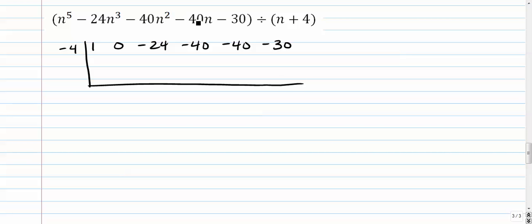Make sure I didn't screw up any of these. No, I think I'm all right. So here we go. We're going to bring down the 1. Negative 4 times 1 is negative 4. Add those together. Negative 4 times negative 4 is 16. Add those together.